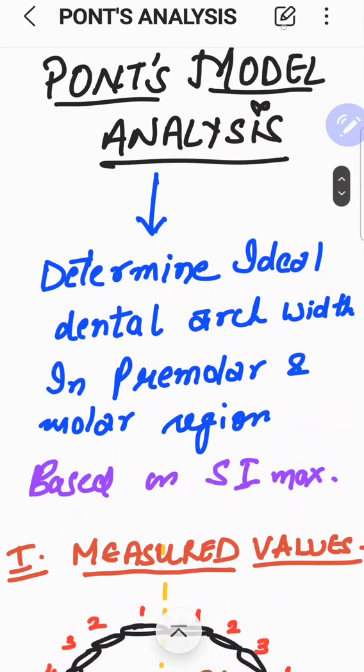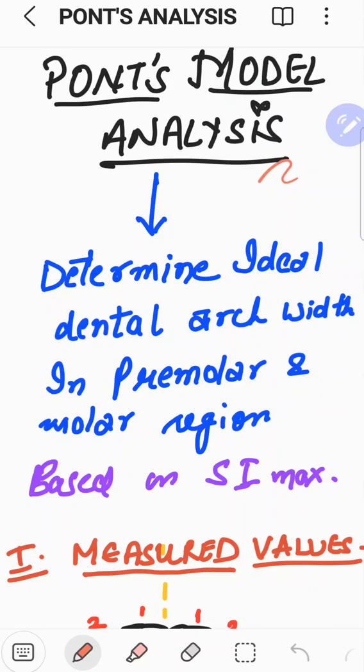Now, in 1909, there was a person named as PONTS. What he did is, he proposed a method for determining the ideal dental arch width in premolar and the molar region. On what basis? On the sum of mesiodistal width of four maxillary incisors.